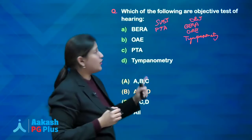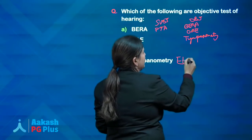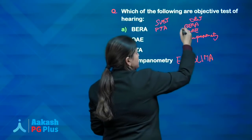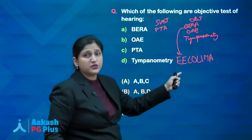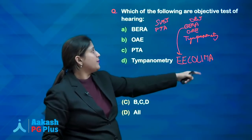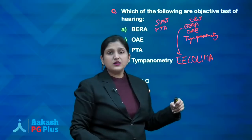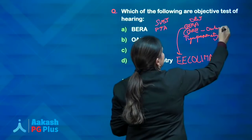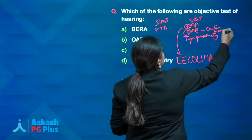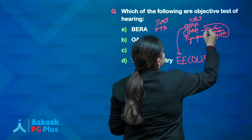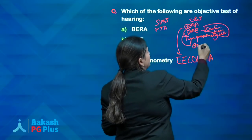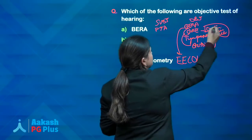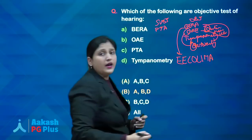In BERA, the waves are organized by the mnemonic EE-COLIMA. Otoacoustic emissions (OAE) are generated by the outer hair cells — this is a frequently asked question. OAE can also be used for monitoring ototoxicity — all conveniently starting with 'O', making it easier to remember.